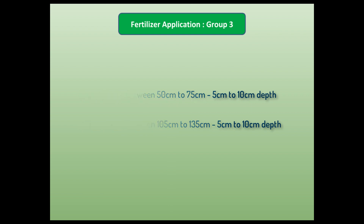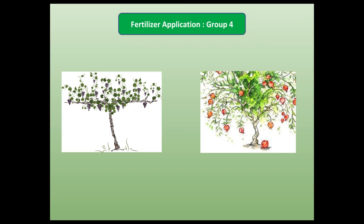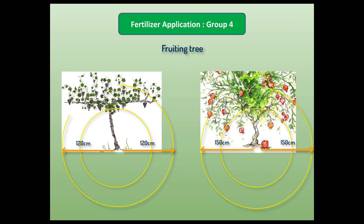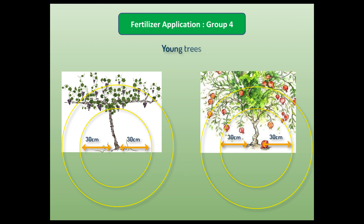In Group 4 — grapes and pomegranates — the active roots in fruiting trees start at 60 centimeters from the trunk. In grapes, the roots spread up to 120 centimeters, and in pomegranates up to 150 centimeters. In both cases the roots are 5 to 10 centimeters below the soil surface. In young trees it is about half — starting at 30 centimeters from the trunk and spreading up to 60 centimeters.